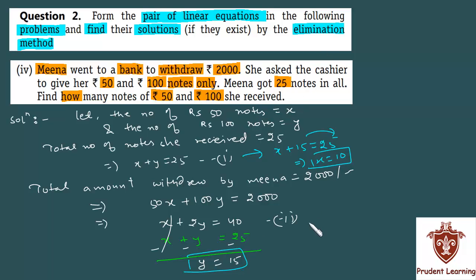Therefore, the number of rupees 50 notes, which you denoted by x, is 10. And the number of 100 rupees notes, which is y, is 15. This completes our solution. Let us now move on to the last section of the same question.